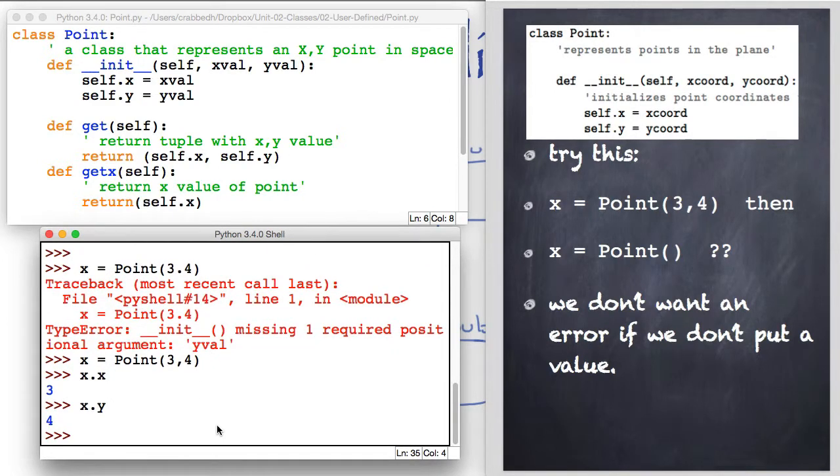Now if we did X dot X that would be our X value. X dot Y is our Y value. But notice what happened when I only put one number, 3.4, not two. I get a missing argument and it throws an exception and crashes. What if we don't want an error? What if I just want to set the X value? Maybe I don't want to set both values or either value. If I just hit X equals point, what's going to happen? How can we handle that?